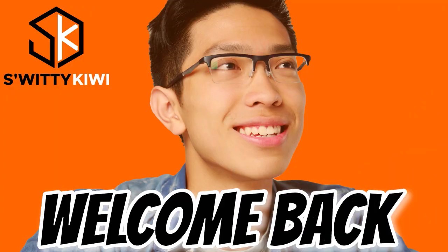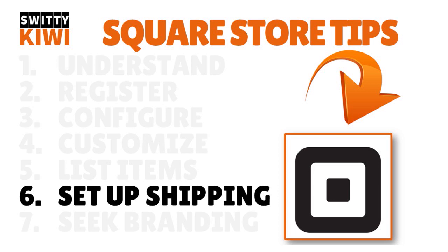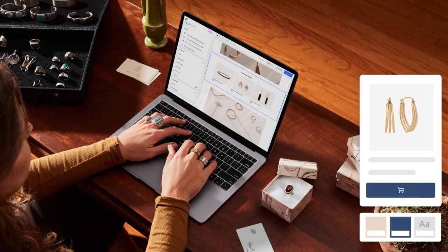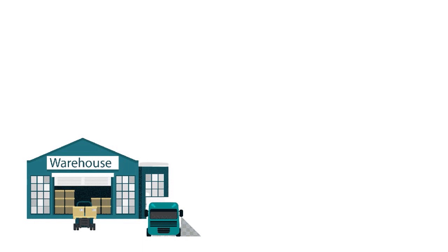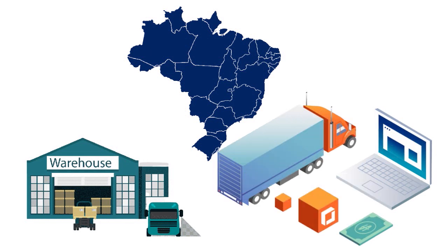Now let's talk about setting up shipping — step six. You need to enter the address you're shipping from, choose your destination regions, and set shipping rates. Square will automatically populate your shipping address, but you can change it — for example, if you're shipping from a warehouse. Add the regions you ship to, such as the US and territories, and exclude areas you don't serve. To get up and running quickly, set up a flat shipping rate.